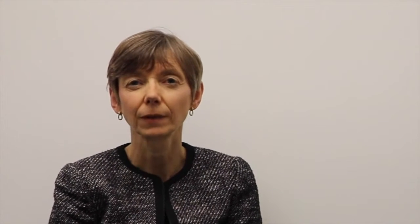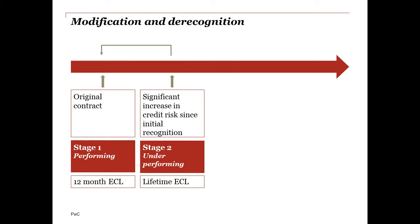It's best to do this with an example. Let's assume a bank originates a loan. When it originates that loan it's in Stage 1 of the impairment model and a 12-month ECL is booked. Then assume sometime later that loan has a significant increase in credit risk and therefore moves into Stage 2 with a lifetime ECL booked.